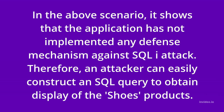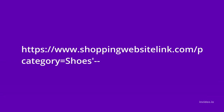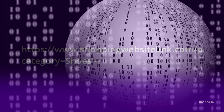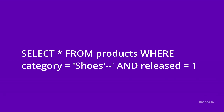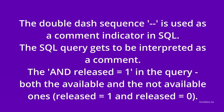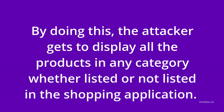Therefore, an attacker can easily construct an SQL query to obtain display of the shoes products. It is important to note that the use of the double dash sequence (--) is used as a comment indicator in SQL. This means that the rest of the SQL query gets to be interpreted as a comment, subsequently removing the AND released equals one from the query. When this happens, all the products get to be displayed — both the available and the not available ones — released equals one and released equals zero. By doing this, the attacker gets to display all the products in any category, whether listed or not listed in the shopping application.